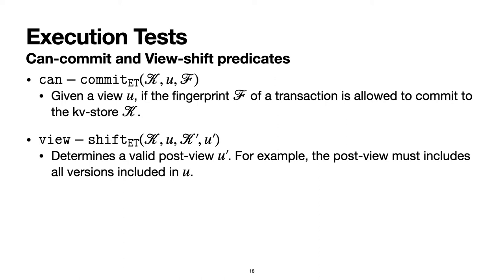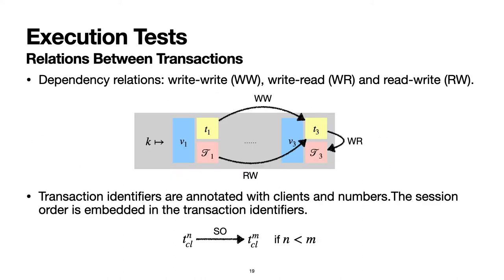We will use the running example to explain can-commit. View-shift determines the post-view of a client after committing a transaction. It often says something like: the post-view must include all versions previously observed by the same client, or versions written by the same client.